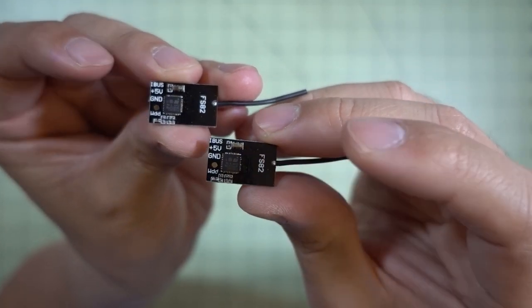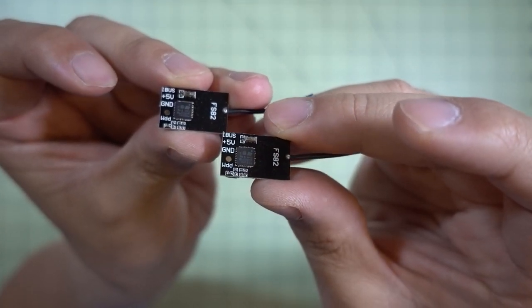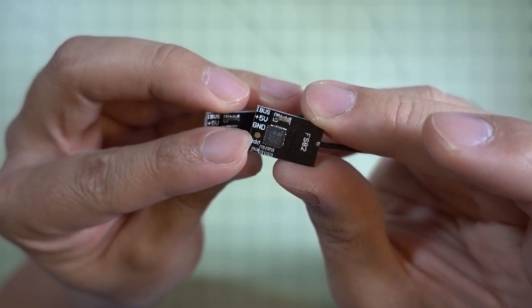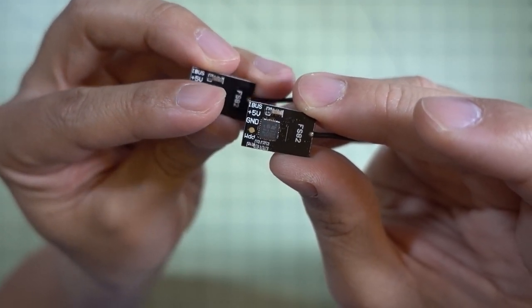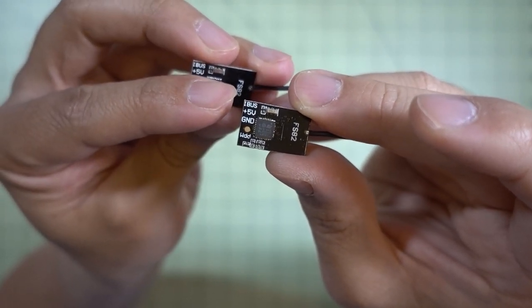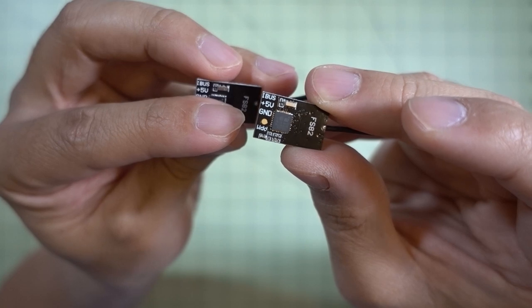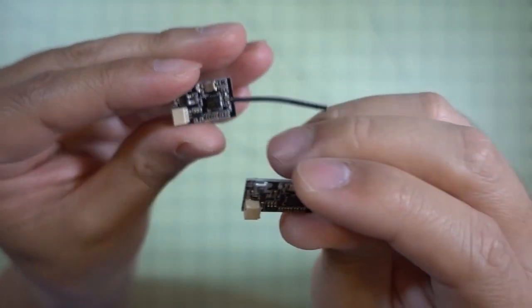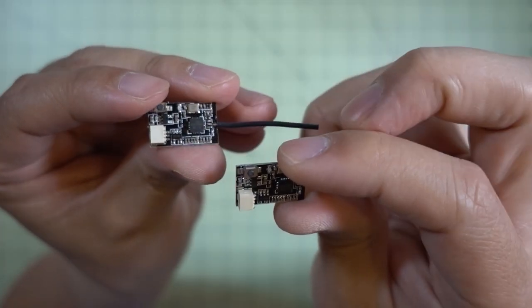So I'll put the links to both of them in the description. If you have no need for PPM obviously just go with the cheaper one. I obviously have no need for PPM so I'm not going to be using that. It also mentions that only failsafe is supported on the iBus connection and not on PPM.